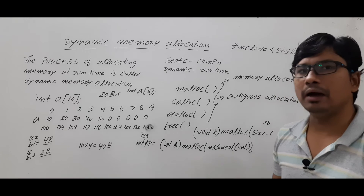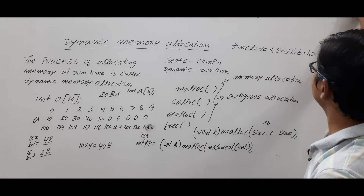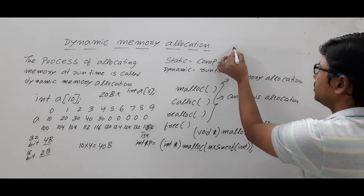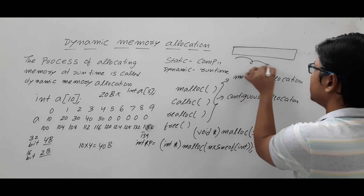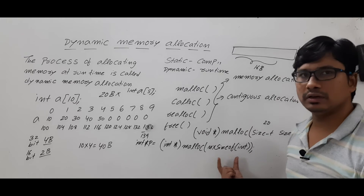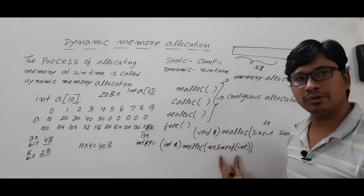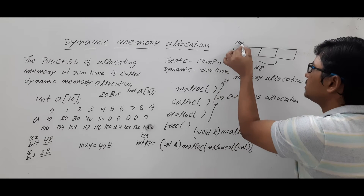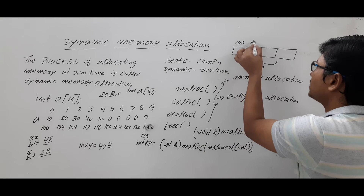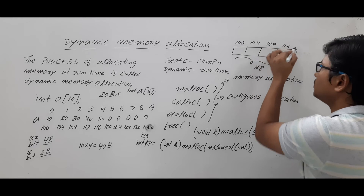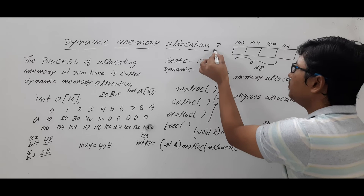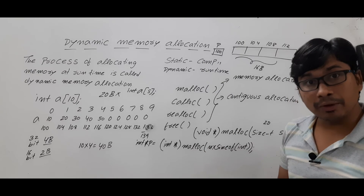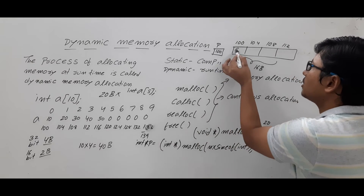If the user enters n as 4, then 16 bytes of memory will be allocated, because one integer on a 32-bit compiler occupies 4 bytes, and 4 × 4 = 16. The address will be contiguous — if the base address is 100, the elements are at 100, 104, 108, 112. The pointer p will hold the base address, which is 100.